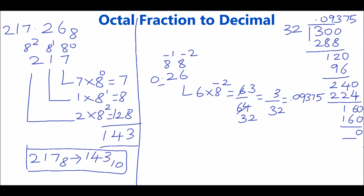Then take the next digit 2. Its associated weight is 8 power minus 1, so 2 by 8, that is 1 by 4. 1 by 4 is 0.25.